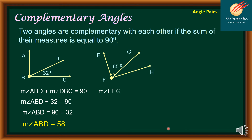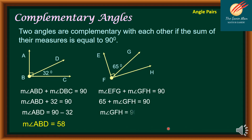Let's have another example. The measure of angle EFG plus the measure of angle GFH is equal to 90. So 65 plus the measure of angle GFH equals 90. Subtracting both sides by 65, the measure of angle GFH equals 25 degrees.